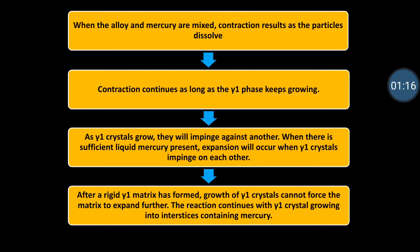When alloy and mercury are mixed, it results in contraction of the restorative material because all the alloy particles tend to dissolve in the mercury. This dissolution of alloy particles in mercury results in the formation of the gamma 1 phase, which leads to the contraction.